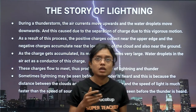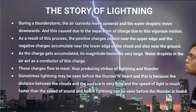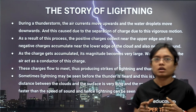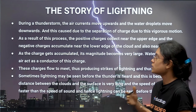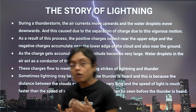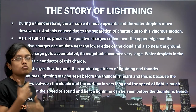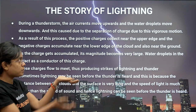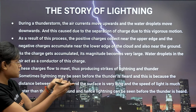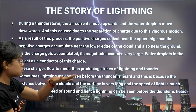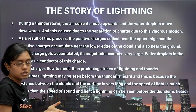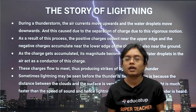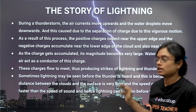The story of lightning: during a thunderstorm, air currents move upwards and water droplets move downwards. This causes the separation of charges due to vigorous motion. As a result, positive charges collect near the upper edge of the cloud, and negative charges accumulate near the lower edge of the cloud and also near the ground. As the charge accumulates, its magnitude increases. Water droplets in the air act as conductors, and when these charges flow to meet each other, you can see lightning in the sky.